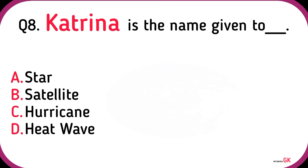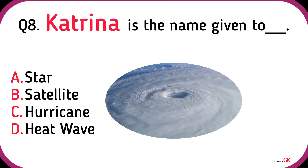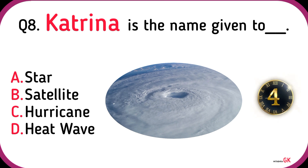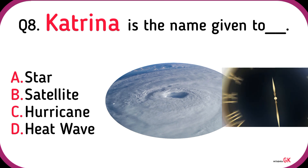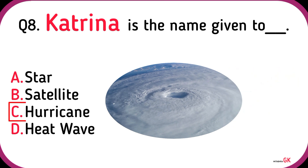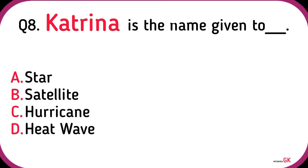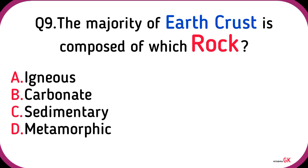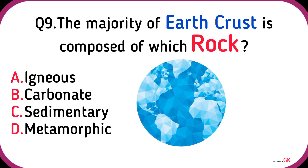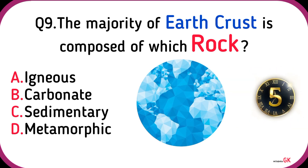Meanders are the features found by rivers. Katrina is the name given to a hurricane.